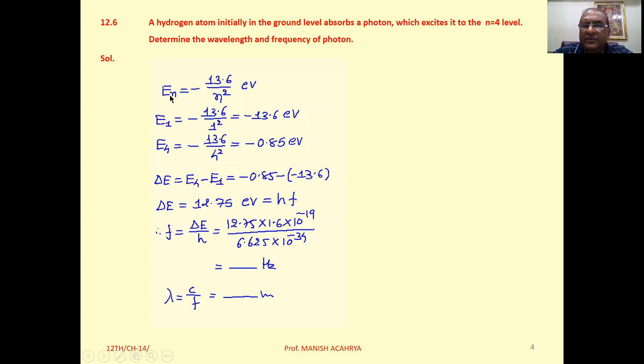We have the equation for the energy in the nth level, that is minus 13.6 upon n square electron volts.